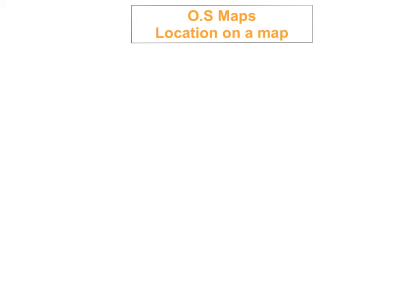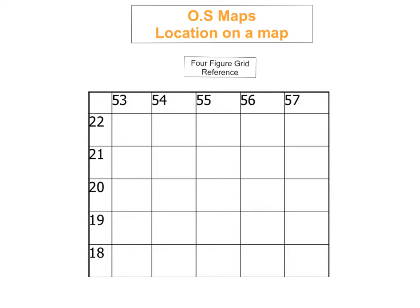The first thing we're going to look at is four-figure grid reference. We use four-figure grid reference to locate different things on maps. Today's lesson I'm going to show you why and how we locate using four-figure grid reference. This here is a typical Ordnance Survey Map that you would have. You've got your numbers on the northing and you've got the numbers on the easting.